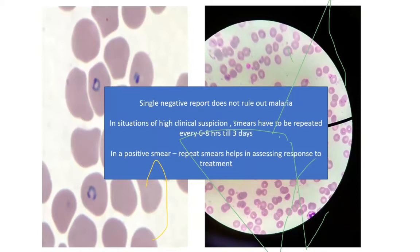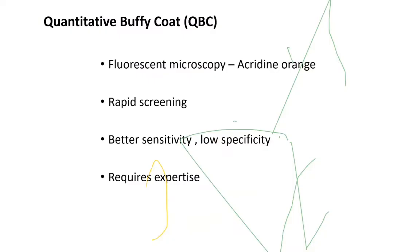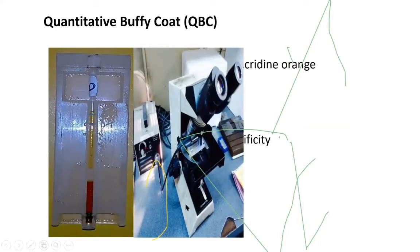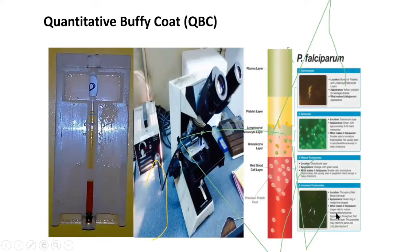In a positive smear, repeat smears help in assessing therapeutic response. Quantitative buffy coat is an easy and rapid method but requires fluorescent microscopy because acridine orange directly stains the DNA of malaria. This is a QBC tube viewed under a fluorescent microscope.